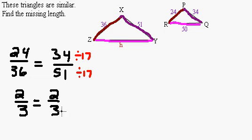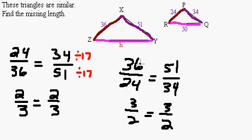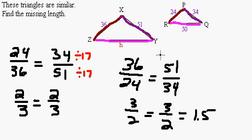Flipping it over, the big triangle is three halves, or 1.5 times bigger than the small triangle. I could have written the proportion as 36 is to 24 as 51 is to 34, which reduces to 3 over 2 equals 3 over 2. You just have to be consistent — if you have the big triangle numbers on top, you must have the small triangle numbers on the bottom in both fractions. This 3 over 2 tells us the big triangle is 1.5 times bigger.